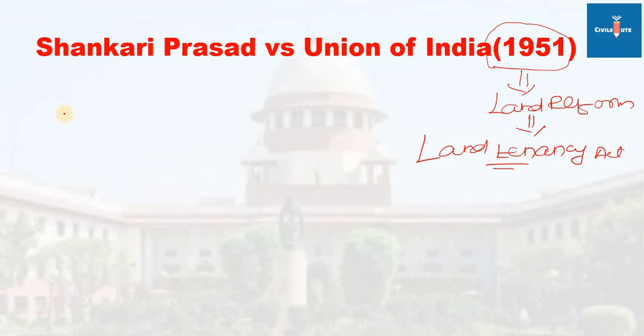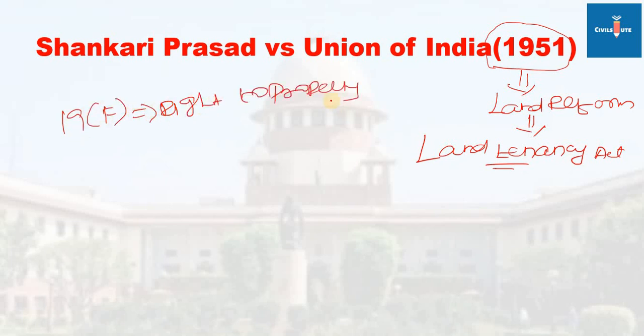In the 1950s, the fundamental right under Article 19(f) — the right to property — and the Land Tenancy Act were in great conflict. The government was fixing limits on the right to property. On the other hand, the government was also fixing land ceilings.